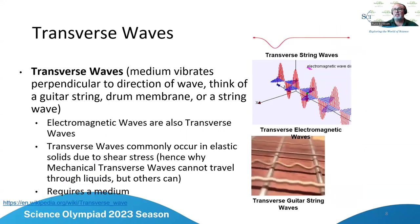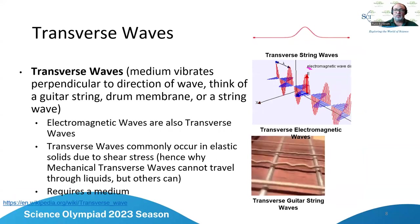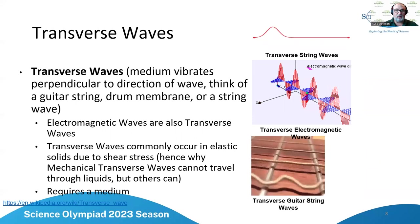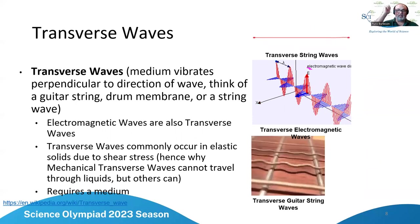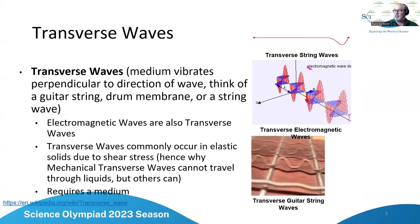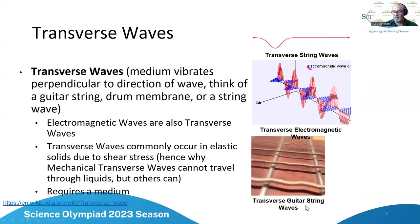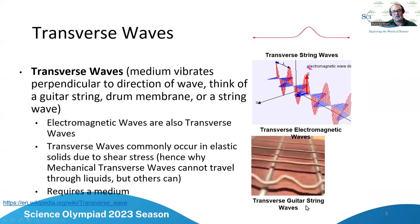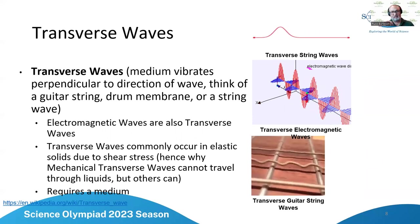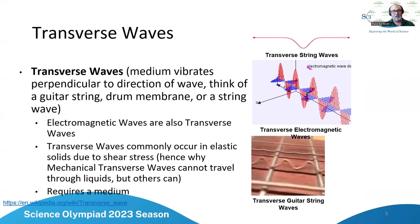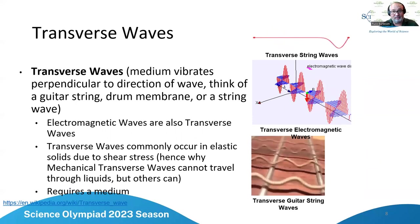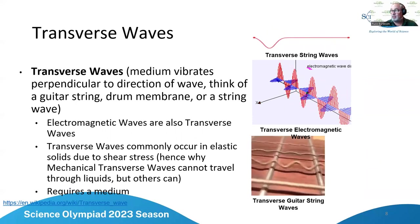Transverse waves include string waves — like flipping a rope — and guitar string waves. When you strum a guitar, the displacement is up and down but the propagation of travel is along the string. That's a transverse wave.